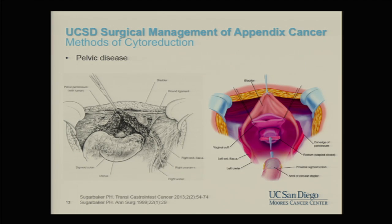In the pelvis, many times we can just remove the peritoneal lining and save surrounding structures. Occasionally the colon, uterus, or ovaries are diseased and must be removed as part of the cytoreduction. Obviously the reconstructive phase is more intense for these kinds of procedures.